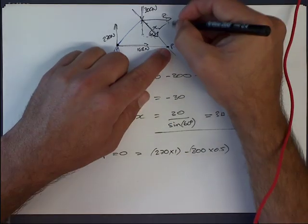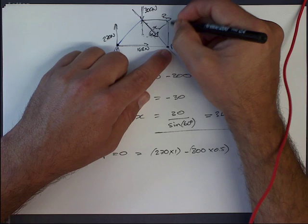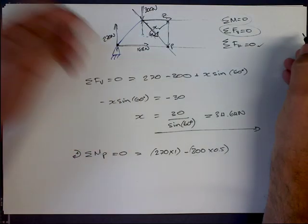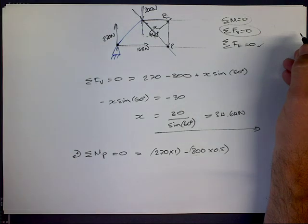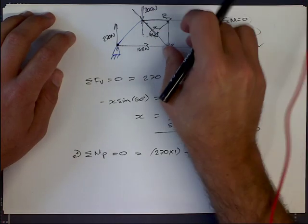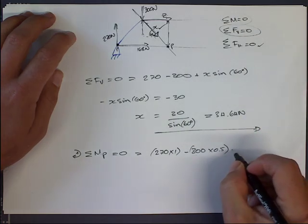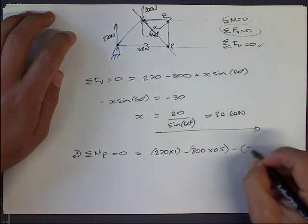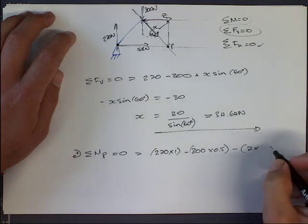I'm going to assume it is anti-clockwise, so we're saying minus z times 0.86. The reason I said 0.86 is because if you use trig, you can figure out the perpendicular height of a 1 by 1 by 1 triangle is 0.86.